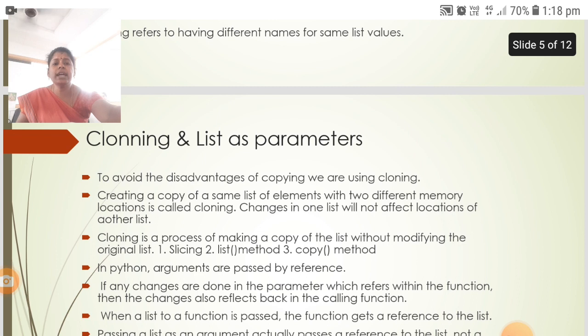Then cloning and list as parameters. To avoid the disadvantages of copying, we are using cloning. Creating a copy of the same list of elements with two different memory locations is called cloning.